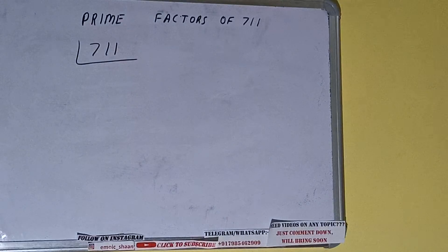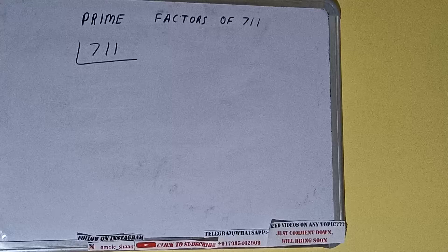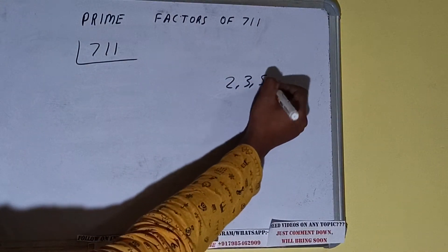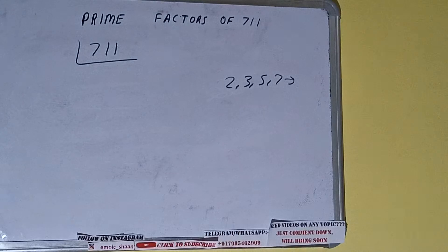The next thing we need to know about is what are prime numbers. So prime numbers are numbers that are divisible by 1 and the number itself, like 2, 3, 5, 7, and so on.